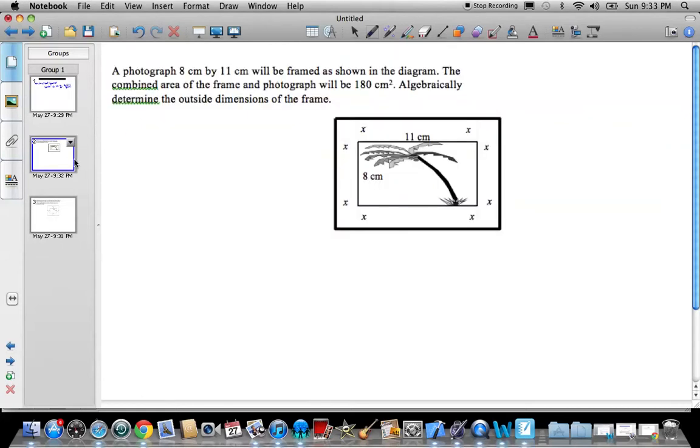So let's look at one. This is a photograph 8 by 11, will be framed as shown in the diagram. The combined area of the photograph and the frame is 180 centimeters squared. Algebraically determine the outside dimensions, or algebraically determine the values of x. That's kind of the key that you've got to find x in this case. You've got to find x and not like a maximum area. So actually the entire area of this thing is 180 centimeters.